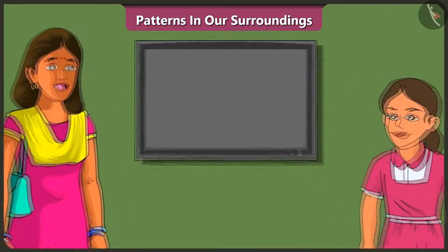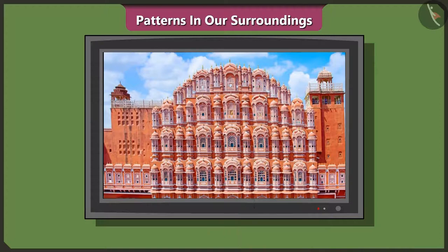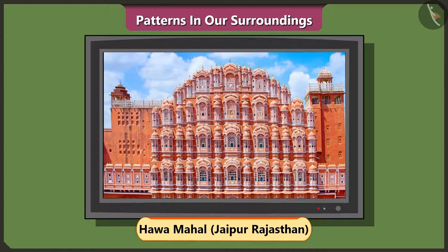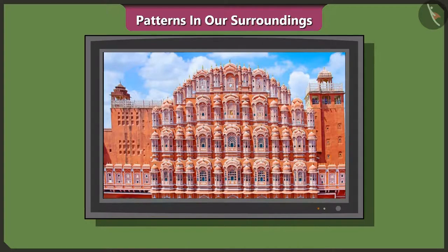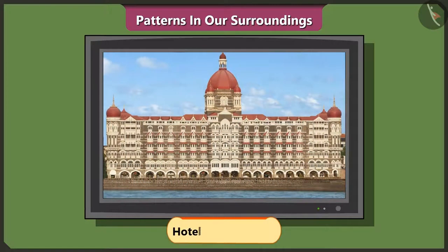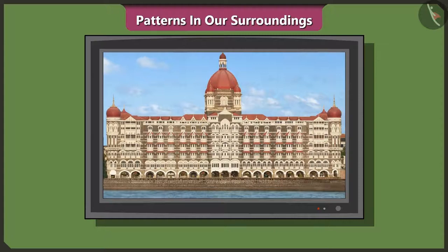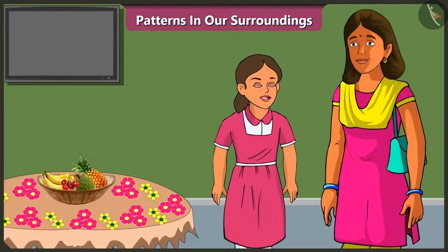Vini, please turn on the TV. Hey, mummy, is there a pattern on this building as well? Yes, this building is the Hawa Mahal at Jaipur in Rajasthan. And this? This is the Taj Hotel in Mumbai. Mummy, these patterns on these buildings make them look so beautiful, isn't it? Hey, beautiful reminds me of decorating the Tiyas beautifully.